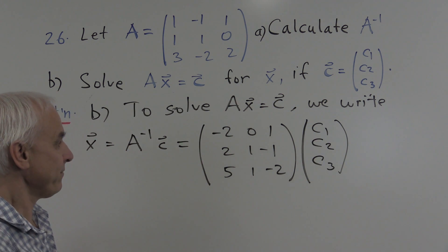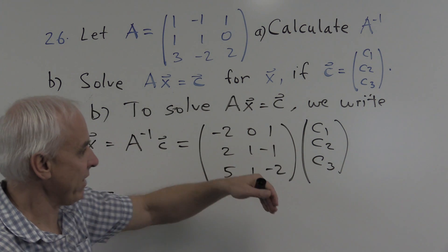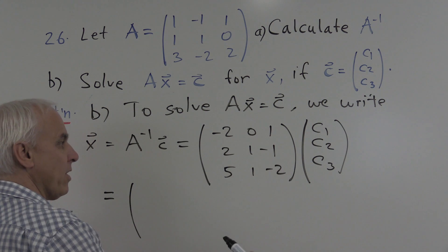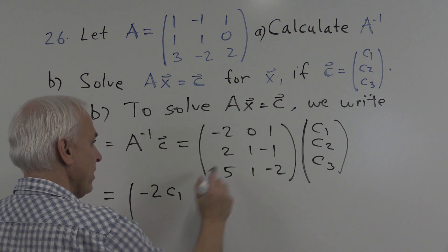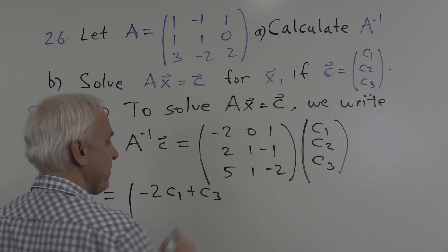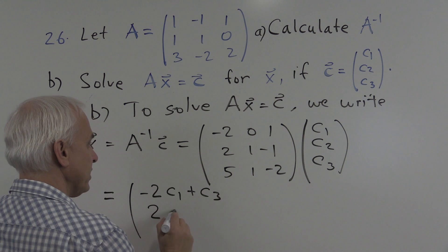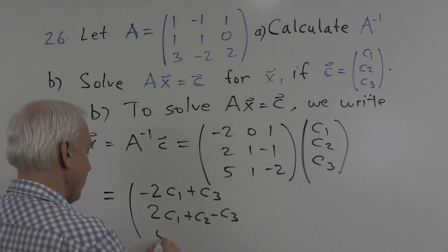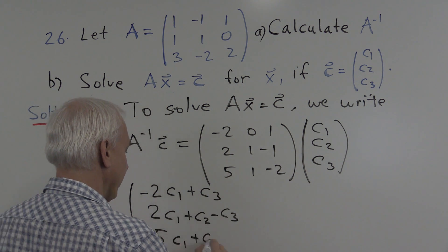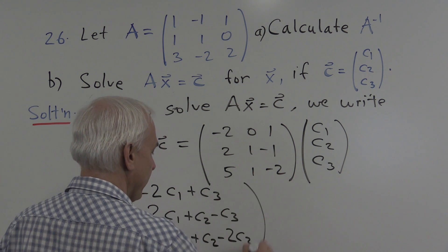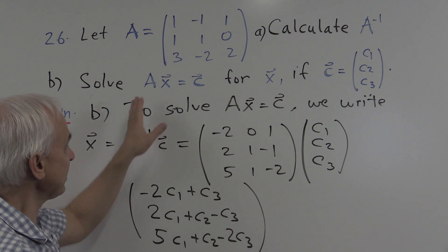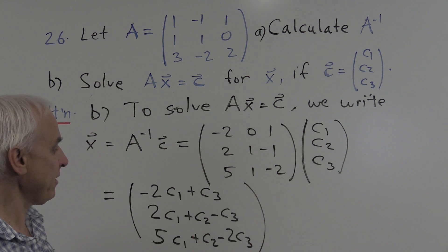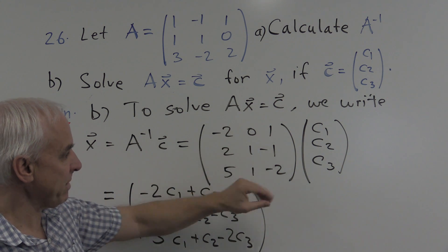Now what do we get when we do that? It's just a matrix times a vector, and we know how to do that. The first entry is the first row times the column: minus 2 C1 plus 0 C2 plus C3. The second row times the column gives 2 C1 plus C2 minus C3. And the third row times the column gives 5 C1 plus C2 minus 2 C3. So there's the general solution to this system Ax equals C for a general right-hand side C1, C2, C3, computed by finding the inverse matrix and doing the multiplication.